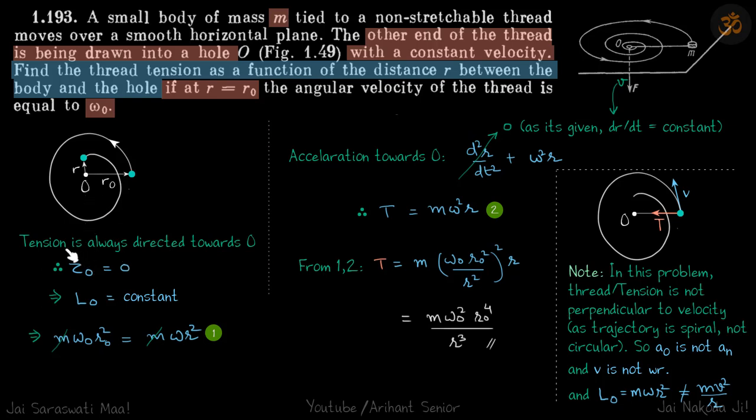First we can conserve angular momentum because tension is always directed towards O, so about O the net torque is zero because r cross T is going to be zero. So tau about O is zero which means L about O is constant. Initially when it is at a distance r naught, our angular momentum is m omega naught r naught square.